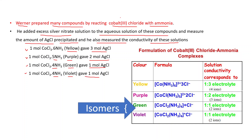These results can be explained if we write the formulas of these compounds using square bracket notation. The species written inside the square bracket will not dissociate, and only the species outside the square bracket dissociate. That's why when we add silver nitrate solution to the first compound, we get a precipitate of AgCl equivalent to 3 mol, because these 3 chloride ions react with AgNO3.